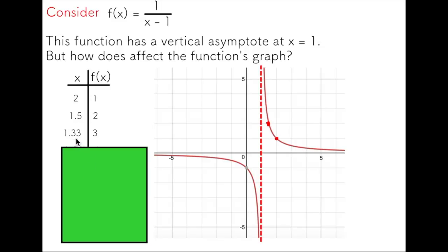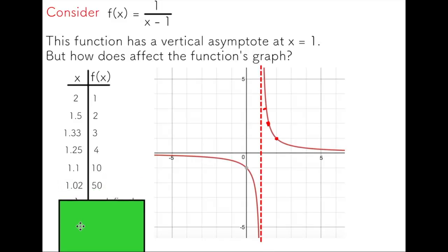If I sub in 1.33, I get the y value of three, which is right here. If I continue this, subbing in x values getting closer and closer to one, you're going to see my y values get bigger and bigger and bigger to the point where they're so far off my graph I can't even show you.